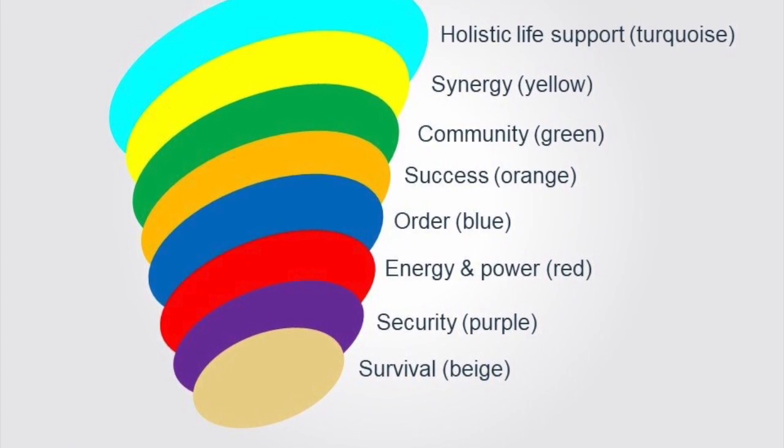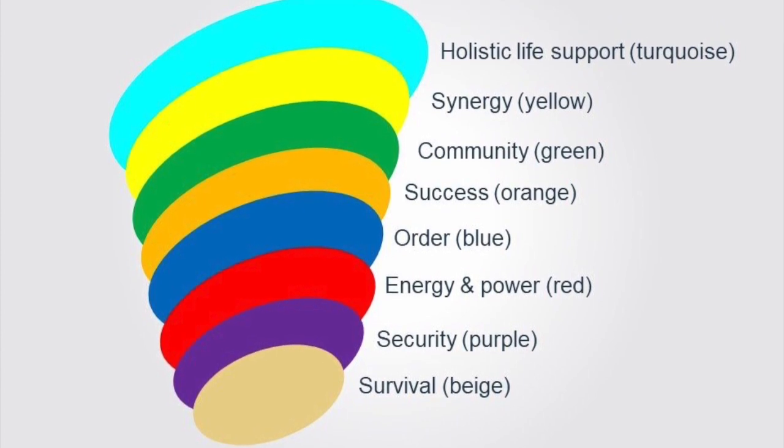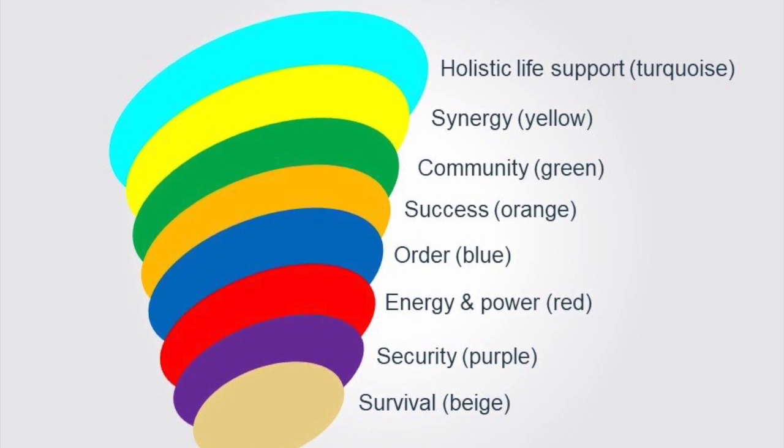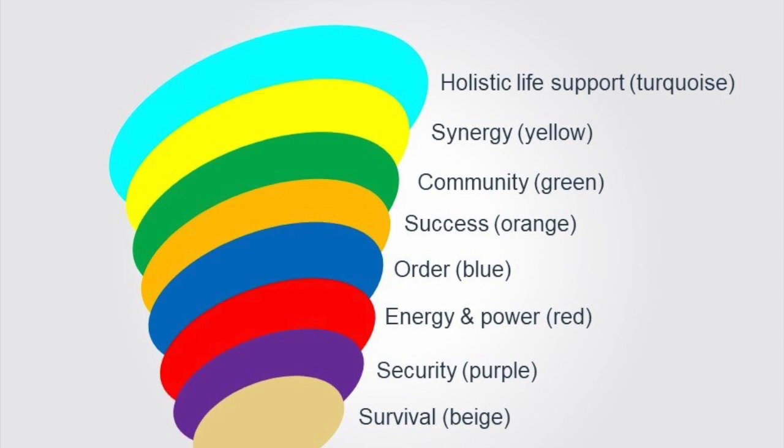Here you see the Spiral Dynamics map. First you have survival, known as Beige. Second, you have stage Purple, then Red, Blue, Orange, Green, Yellow, and Turquoise. At the bottom of Spiral Dynamics we have stage Beige, which is part of human history when we were hunter-gatherers and just becoming homo sapiens — like homo erectus or other proto-human species. About 300,000 years ago we became homo sapiens. There is actually more evidence now that homo sapiens are older than originally thought — many believed 100,000 to 150,000 years old, but humans are now considered about 300,000 years old or more.